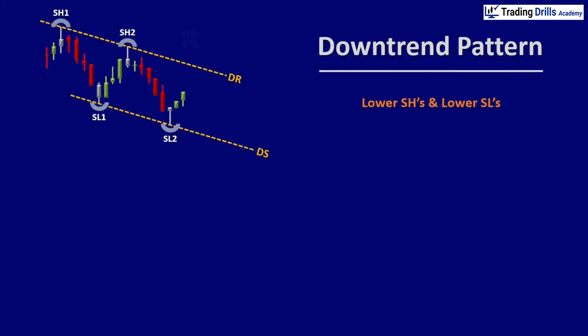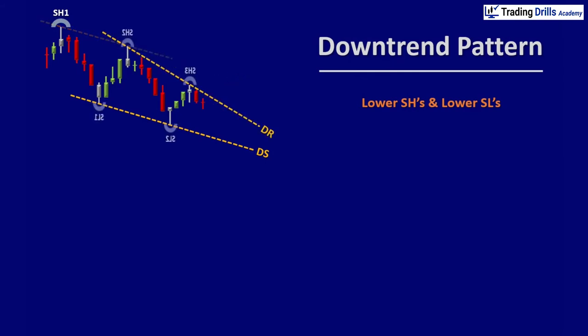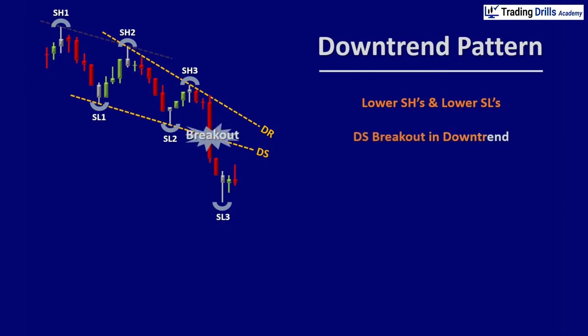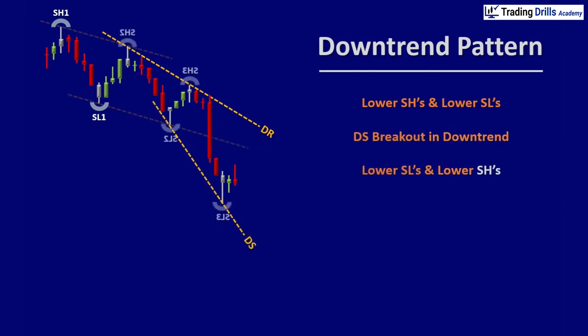When you update the dynamic channel in a downtrend pattern and see the price breaks the dynamic support line, you often see that the new pattern has lower swing lows and lower swing highs, which indicates the continuation of the downtrend pattern.